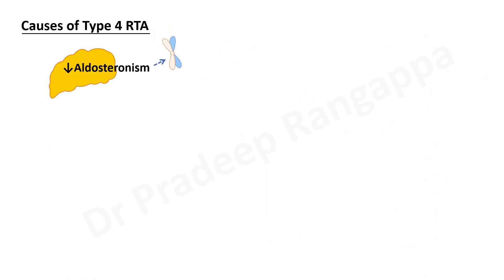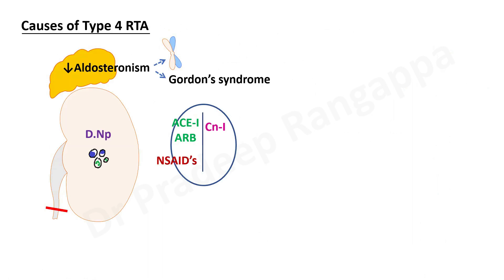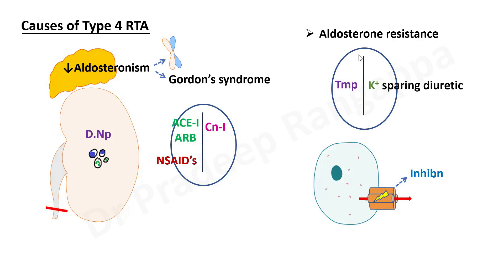Causes of type 4 RTA include hypoaldosteronism — genetic or congenital — and Gordon syndrome. Renal causes include diabetic nephropathy, glomerulonephritis, and obstructive uropathy. Drugs include ACE inhibitors, angiotensin receptor blockers (ARBs), calcineurin inhibitors like cyclosporine used in transplant, and NSAIDs. Aldosterone resistance can be caused by trimethoprim and potassium-sparing diuretics like spironolactone or eplerenone. Sodium channel deficiencies can also cause type 4 RTA.